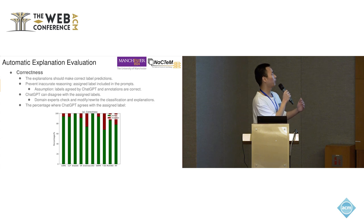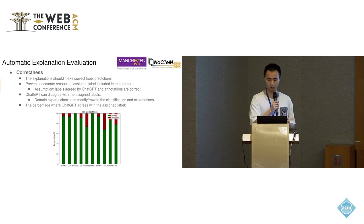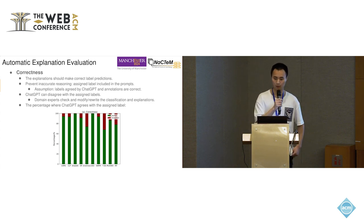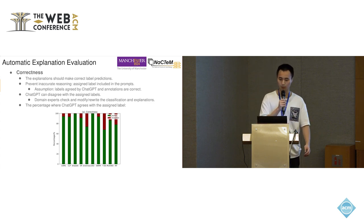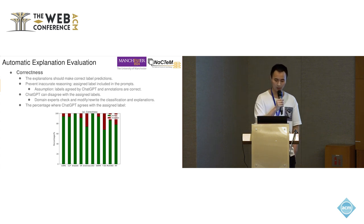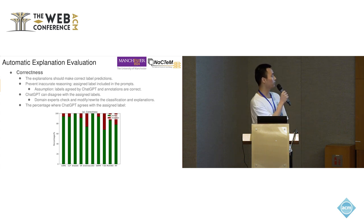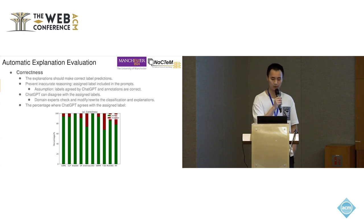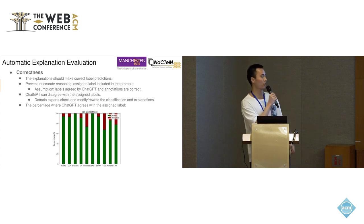We provide a holistic evaluation of the quality of the generated explanations. Due to the high volume of data posts, we provide automatic evaluation methods for the whole dataset. The first aspect is correctness, evaluating whether explanations can make correct label predictions. To prevent inaccurate reasoning, we included the assigned labels in the prompt. Our assumption is that labels agreed upon by both ChatGPT and the annotations can be considered correct. However, we notice that ChatGPT can sometimes disagree with the assigned labels, and in these cases we ask domain experts to check and modify the classification and explanations.